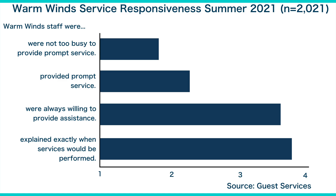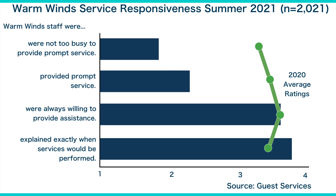In summary, a horizontal bar chart can be a very effective means of providing a fine-grain analysis of a data set. Moreover, its analytical power can be enhanced by combining it with a line chart. The resulting combo chart could show, for example, how ratings from this year's guests compare to the previous year, which would be a very visual way to track the delivery of exceptional customer service at the Warm Winds Resort.